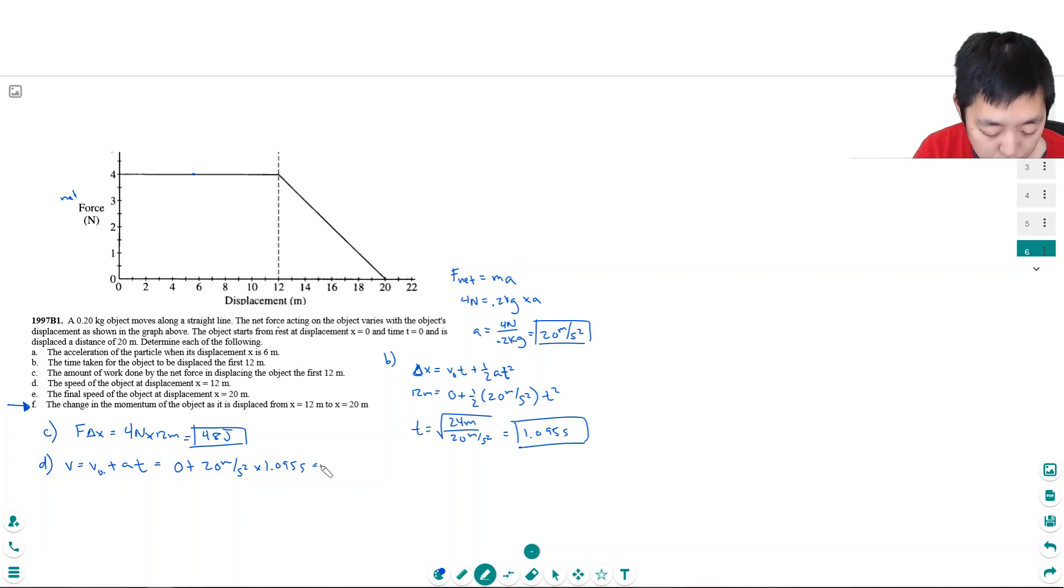Part E: the final speed of the object at displacement x equals 20 meters. Okay, this is a little bit tricky because the force isn't constant, but I can do the total work done. If I look at the total work done, all the work done should go into creating kinetic energy—this is the energy conservation part. We know this area is 48 joules. I'm almost sure we did this question not too long ago.